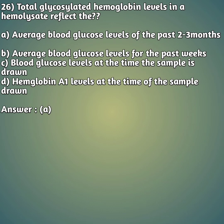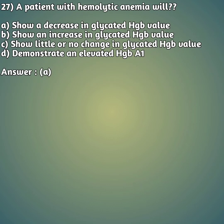Question 27: A patient with hemolytic anemia will — option A: show a decrease in glycated Hb value, option B: show an increase in glycated Hb value, option C: show little or no change in glycated Hb value, option D: demonstrate an elevated HbA1 value. The right answer is option A, show a decrease in the glycated Hb value.